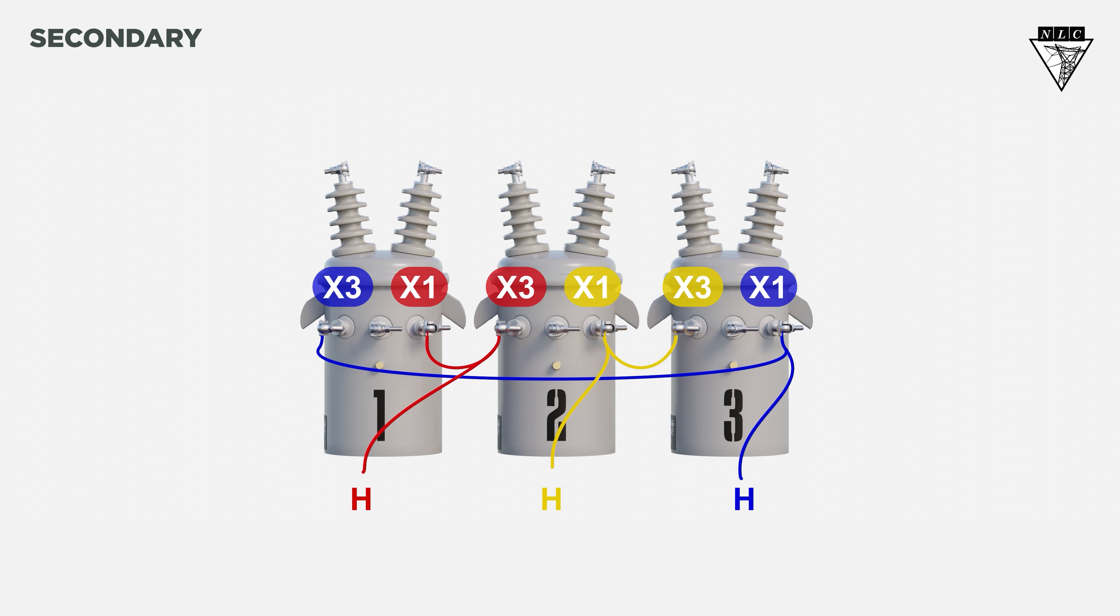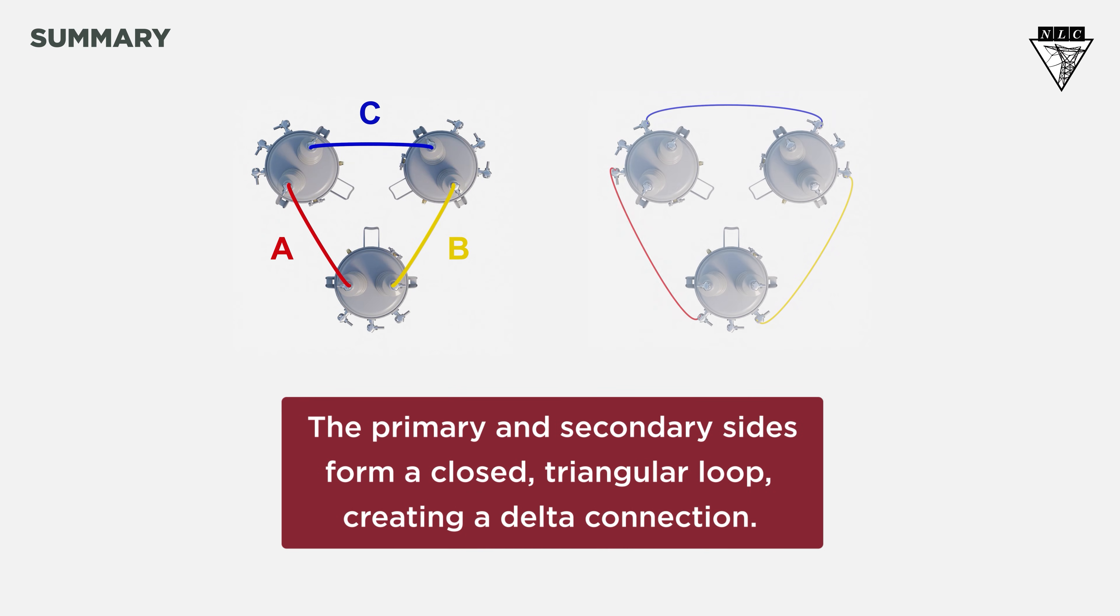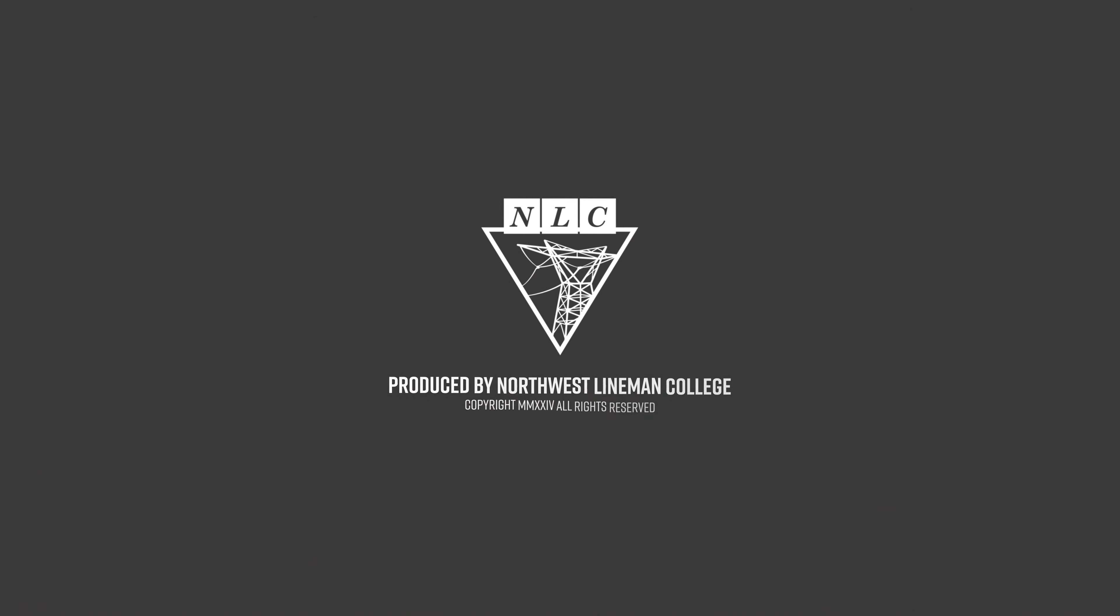So, what did we learn? The primary and secondary sides form a closed triangular loop, creating a delta connection. Remember to always check your voltage and rotation according to company procedures. Thanks for watching this Northwest Lyman College tutorial. Work safe out there.